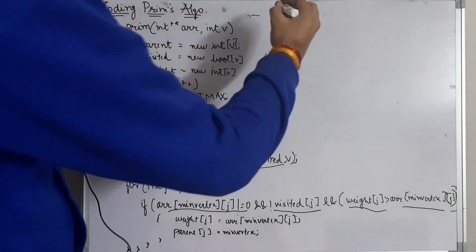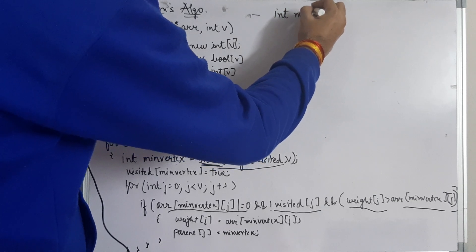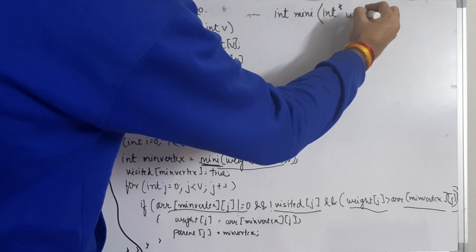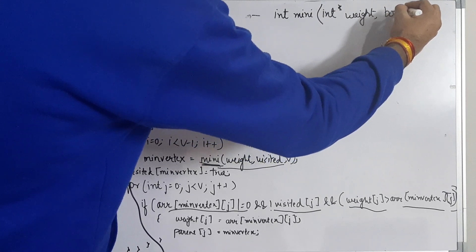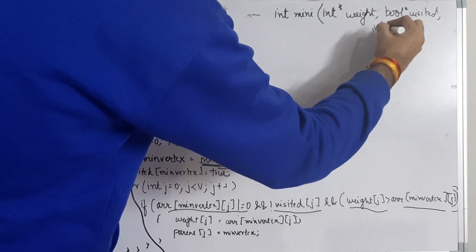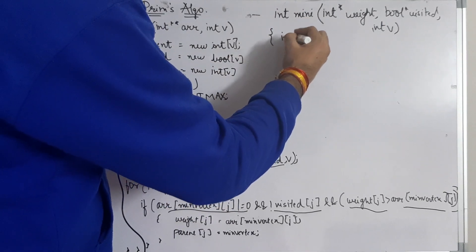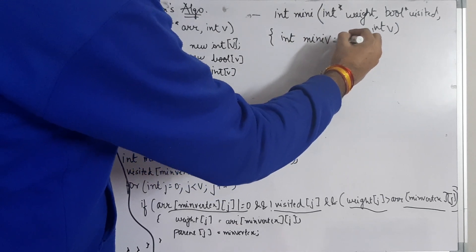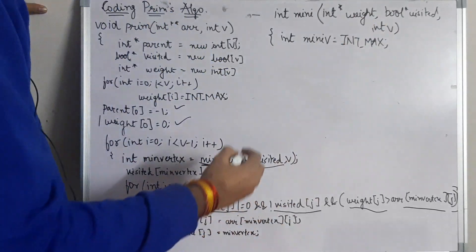The min vertex function takes an integer array of weights, a boolean array of visited, and the number of nodes V. We initialize a variable miniV to INT_MAX and an index variable to track the result.